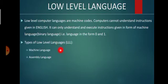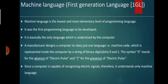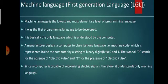The types of low level languages are machine language and assembly language. Machine language is also known as first generation language. It is the lowest and most elementary level of programming language, and it was the first programming language to be developed. It is basically the only language understood by the computer. A manufacturer designs a computer to obey just one language — that is machine code.